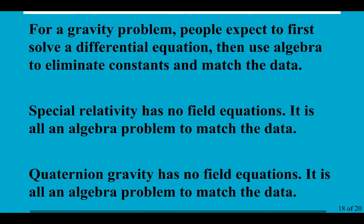The big problem, though, is that since Newton's time, we say we expect to solve a differential equation and then use algebra to eliminate constants and match the data. In special relativity, there are no field equations. It's just all an algebra problem trying to match the data, make sure that all our inertial observers see that the speed of light is the same. Well, quaternion gravity has no field equations. It's again an algebra problem, and it's got to be consistent with the data.